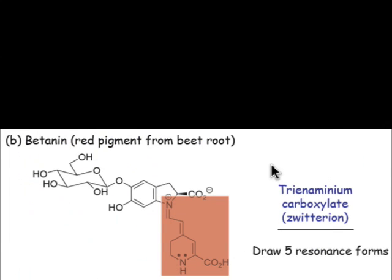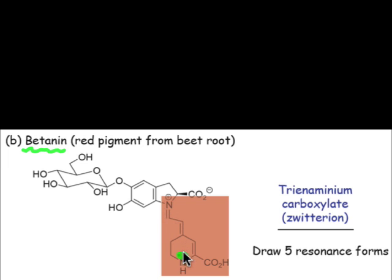The brilliant red color that we associate with beets is due to the pigment known as betanin, whose molecular structure is shown here. This pi system has an interesting donor-acceptor relationship: the lone pair on this nitrogen can be donated into the low-lying pi star orbital of this delocalized unit.